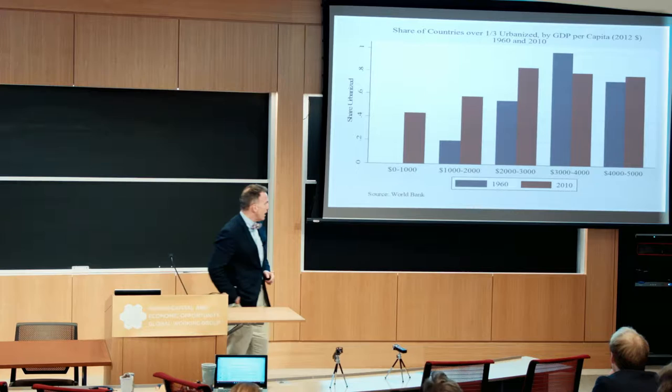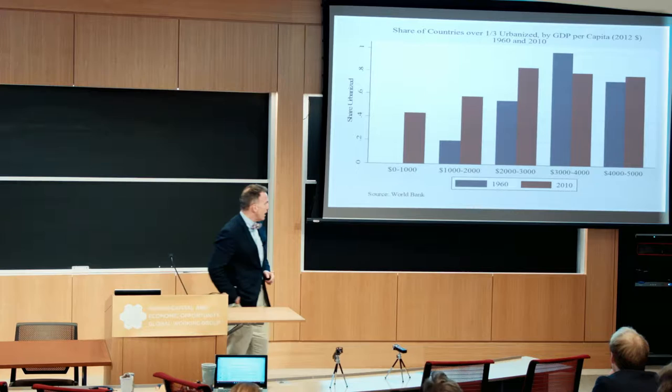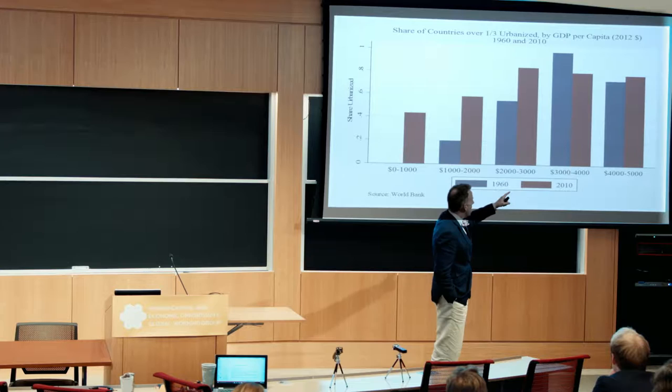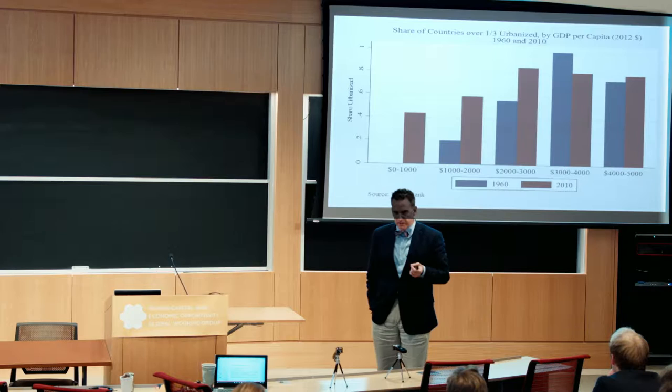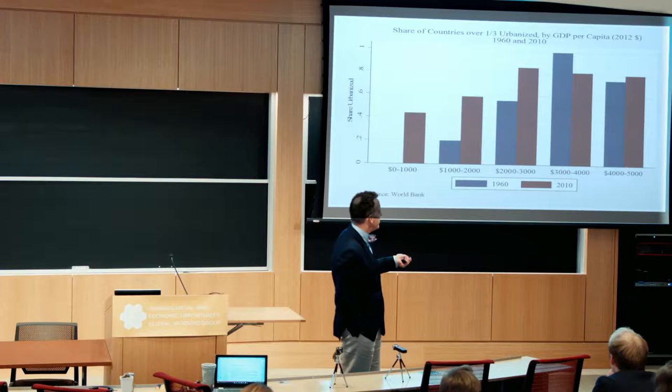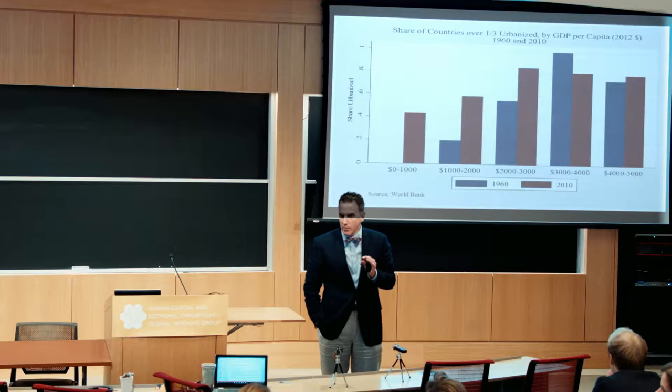Let me start with a graph of the world. What I'm showing you here is, by income category — both in 2012 dollars — the share of countries in each income group that is more than one-third urbanized. The one-third urban threshold is relatively arbitrary, but any way you cut this, it will show you basically the same phenomenon. If you look at countries with $4,000 to $5,000 per capita income, or $3,000 to $4,000, both in 1960 and today, about 80% of them are more than one-third urban. They're generally fairly urban places.